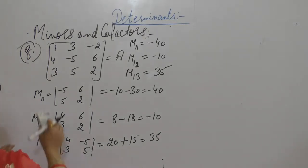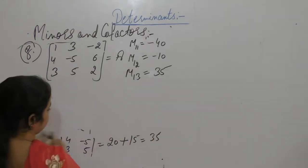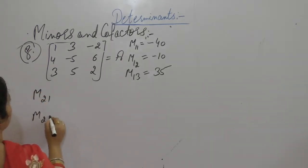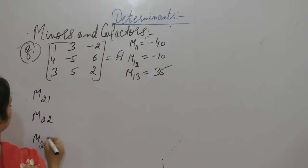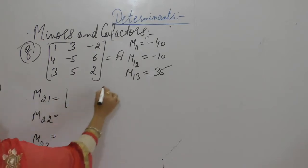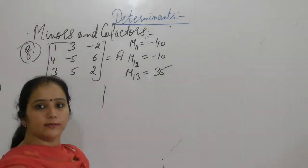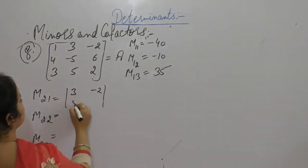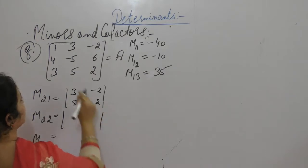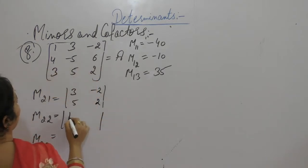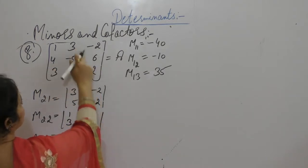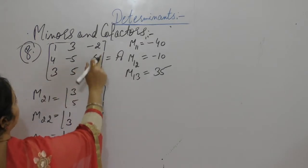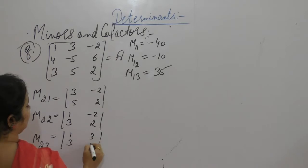Now find M21, M22, and M23. M21: deleting second row and first column gives 3, minus 2, 5, 2. M22: deleting second row and second column gives 1, 3, minus 2, 2. M23: deleting second row and third column gives 1, 3, 3, 5.